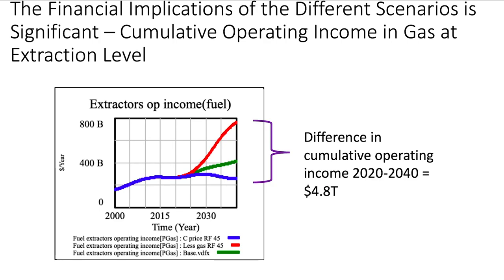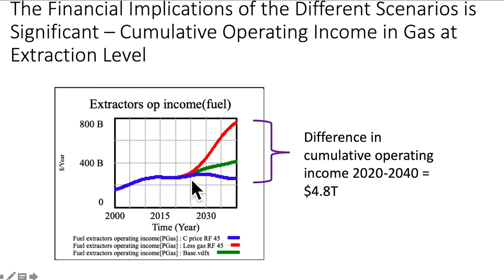Some back-of-the-envelope quick math: for the extractors level — just for natural gas — you can see for every year what the operating income is, around $200 billion growing towards $250 to $300 billion. Under the different scenarios: the base is the green line; in the carbon price scenario, the annual operating income goes down.